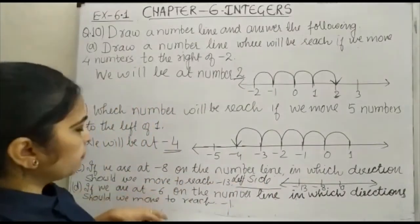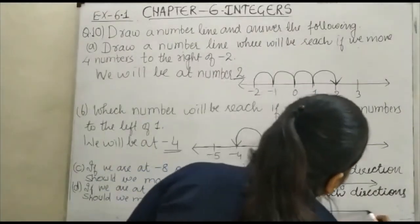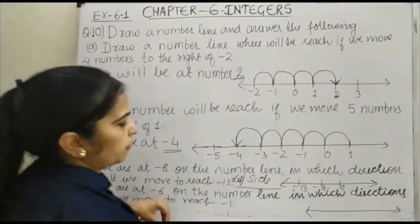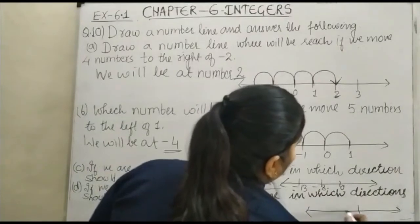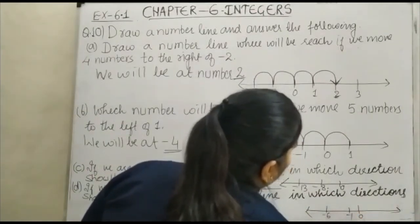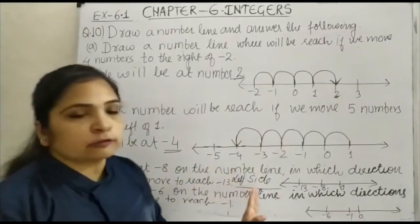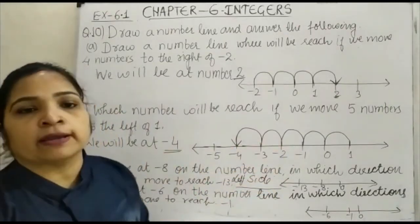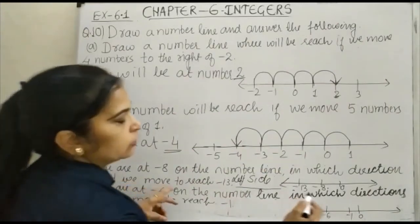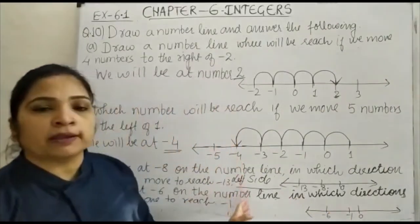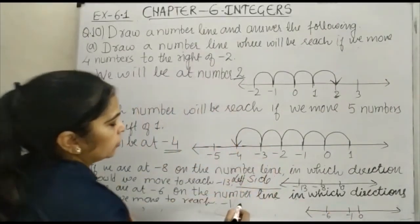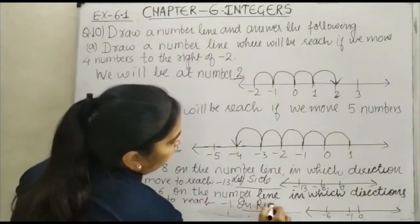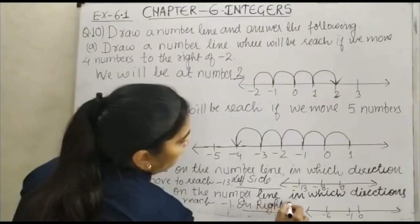Again, if we are at minus 6, you can plot the number line. This is your 0, this is your minus 6, and this is your minus 1. Starting from minus 6, you have to reach minus 1 and define the direction. Since minus 1 is to the right of minus 6, your answer will be on the right side.